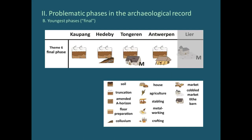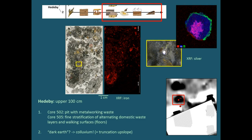Moving to the youngest, final phases — one icon really dominates across all these sites: truncation. This is a real problem because if the evidence is gone, you can't see it microscopically anyway. In Hedeby, the upper hundred centimeters are the most interesting for this latest phase. In core 502, from the geomagnetic anomaly that may have been a workshop, we see a pit with metalworking waste. The XRF picture shows a very clear-cut accumulation of iron slag and metal slag, with some silver too — indicating mixed metalworking. This pit may have been an infilled workshop.